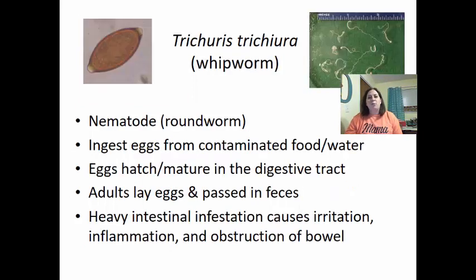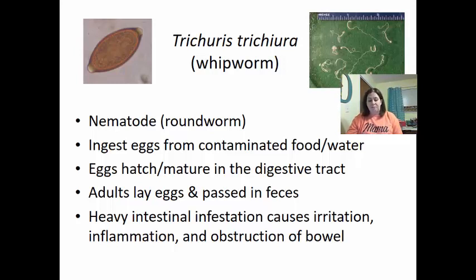Trichuris trichiura are whipworms — also roundworms. Eggs from contaminated food or water hatch and mature in the digestive system; adults lay eggs passed through feces to restart the cycle. Heavy intestinal infestation can cause irritation, inflammation, and potential obstruction of the bowels. This concludes a quick overview of digestive diseases.